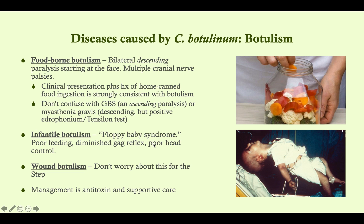Infantile botulism, seen in infants under age one, presents as poor feeding and poor head control — basically, the baby is floppy, giving it the name 'floppy baby syndrome.' With infantile botulism, the baby ate something containing a spore, like honey, which germinated in the GI tract and began making toxin. In contrast, adults with foodborne botulism ingested preformed toxin directly.